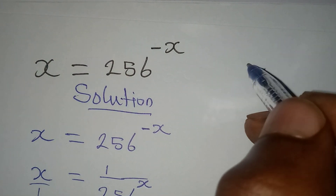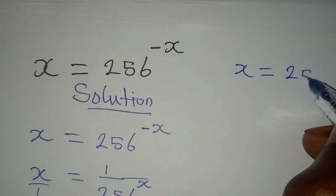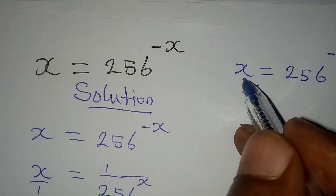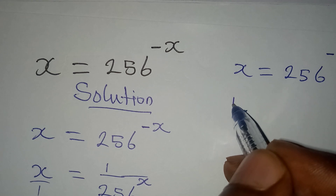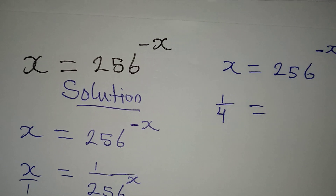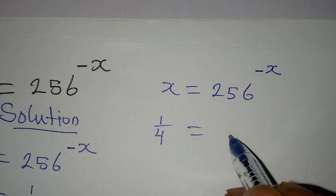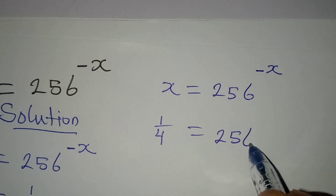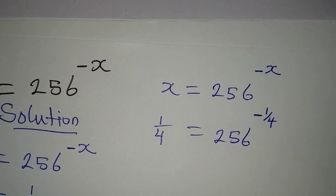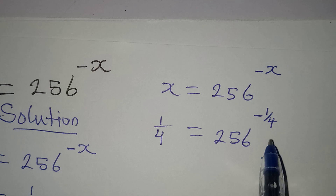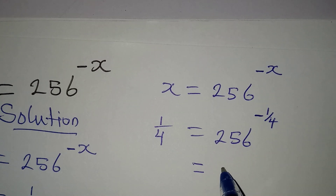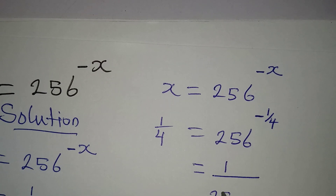The original equation is x = 256 to the power of negative x, and we found x = 1/4. Let's verify by working on the right-hand side: substituting gives 256 raised to the power of negative 1/4. Removing the negative exponent, this becomes 1 over 256 to the power of 1/4.